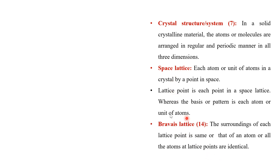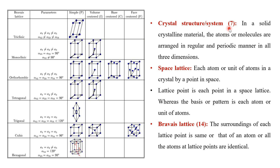These lattice points are filled with what is known as a basis or pattern — an atom or group of atoms present in the crystal structure. So starting from the crystal structure, removing atoms gives the space lattice, and each point in the space lattice is a lattice point. The arrangement or configuration of lattice points is what is known as the Bravais lattice, meaning the surroundings of each lattice point are identical.